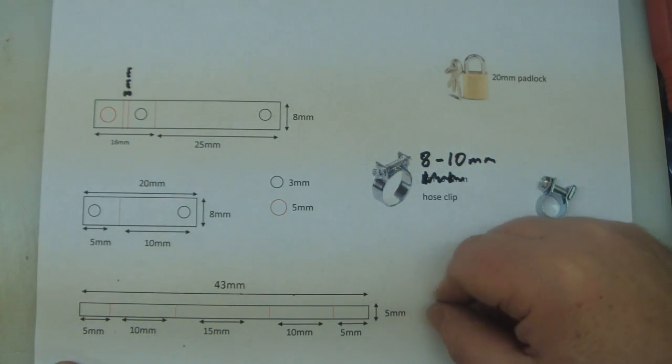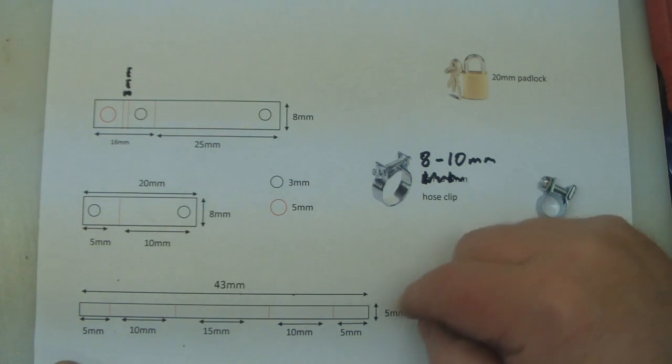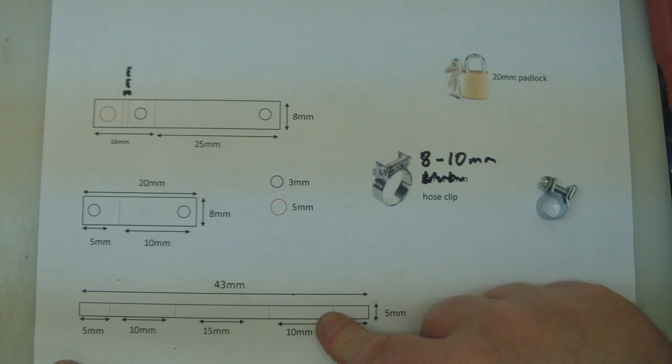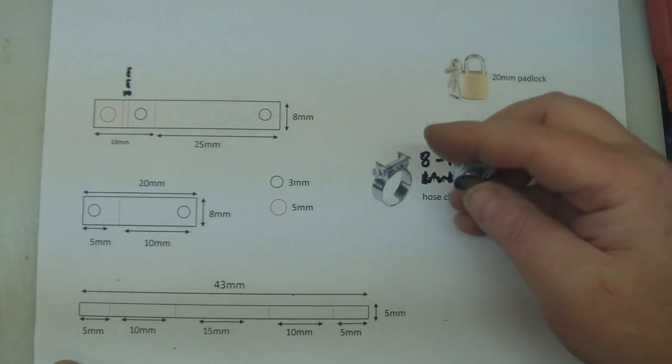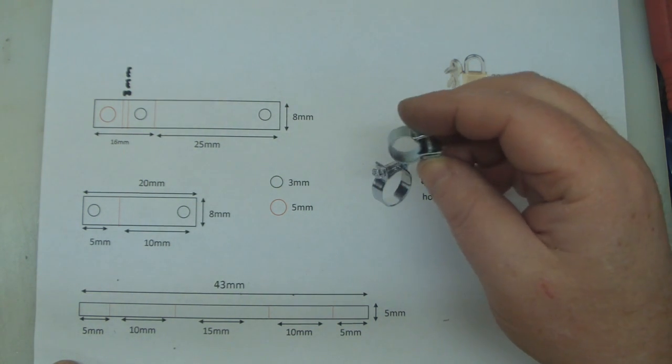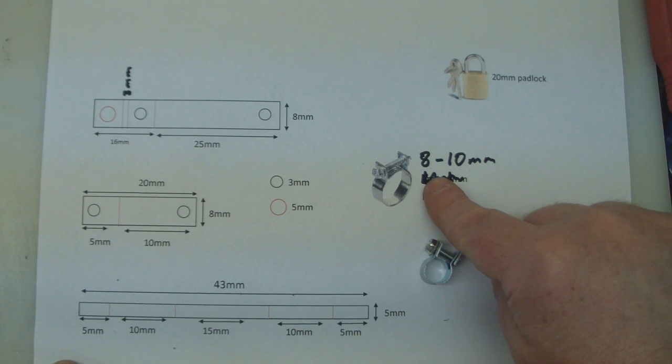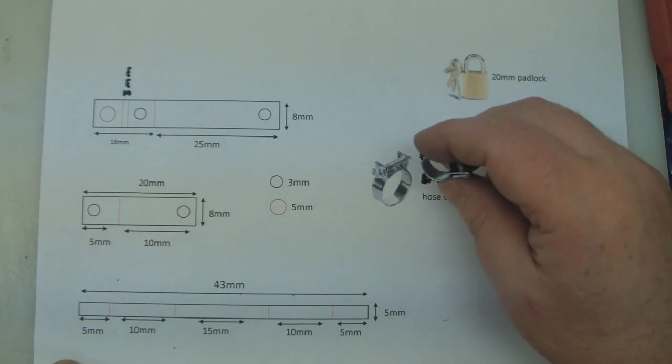So I've made a PDF plan of how I constructed this TV lock. And the actual drawings are not to scale, but the measurements are. And what you're going to need is to get hold of some of these hose lock type jubilee clip brackets. And you want one that's 8 to 10 millimeters. I picked a pack of 10 of these up off eBay for £2.50, so they're really cheap.